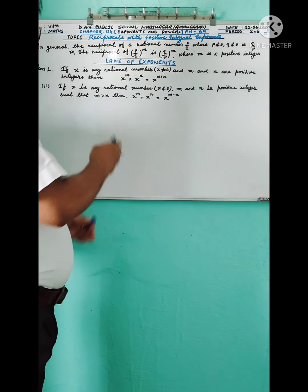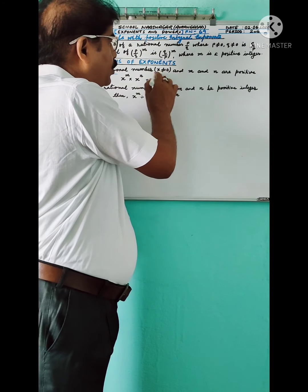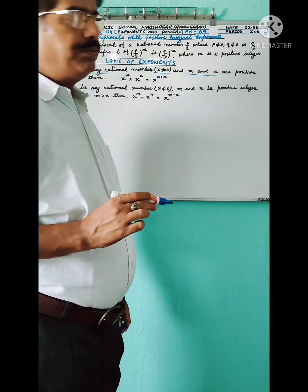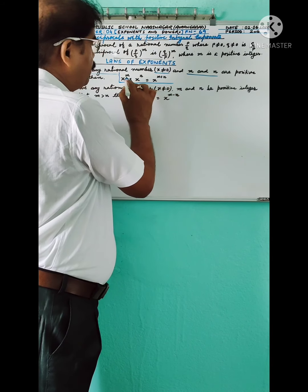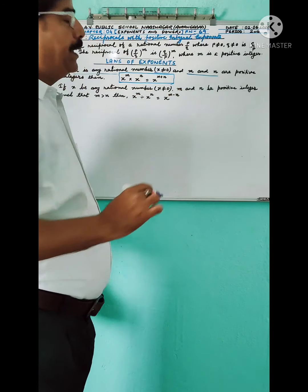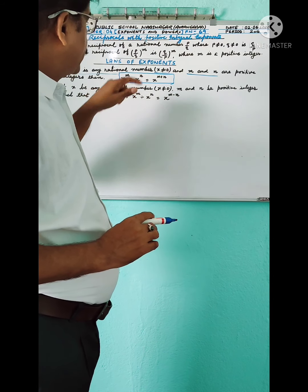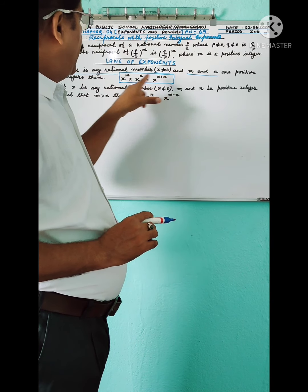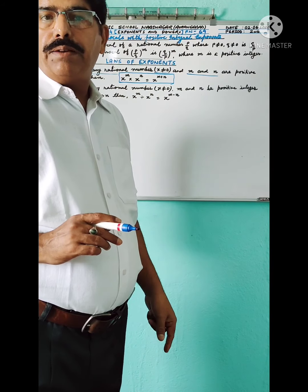The first law: if x is any rational number where x ≠ 0, and m and n are positive integers, then x to the power m multiplied by x to the power n equals x to the power m plus n. That is, when the bases are the same and we multiply, the exponents are added: x^m × x^n = x^(m+n).